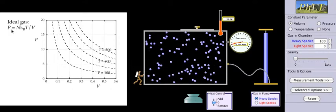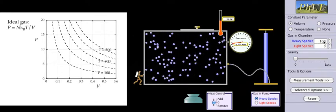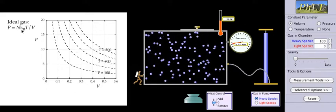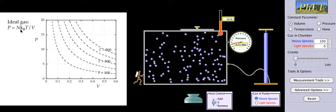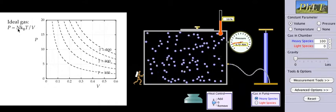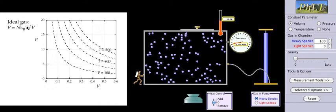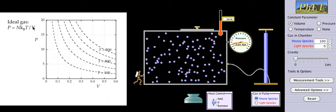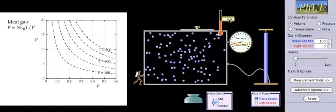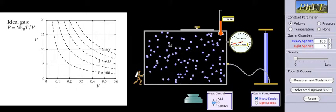I can calculate the pressure if I happen to know the number of particles — there are 100 of these atoms, you can read that over here on the right, so n is 100. The ideal gas law written in terms of number of particles rather than moles will have Boltzmann's constant, temperature, divided by the volume. Temperature you can read over here with this thermometer: 507 Kelvin. Volume, you can just see the volume.